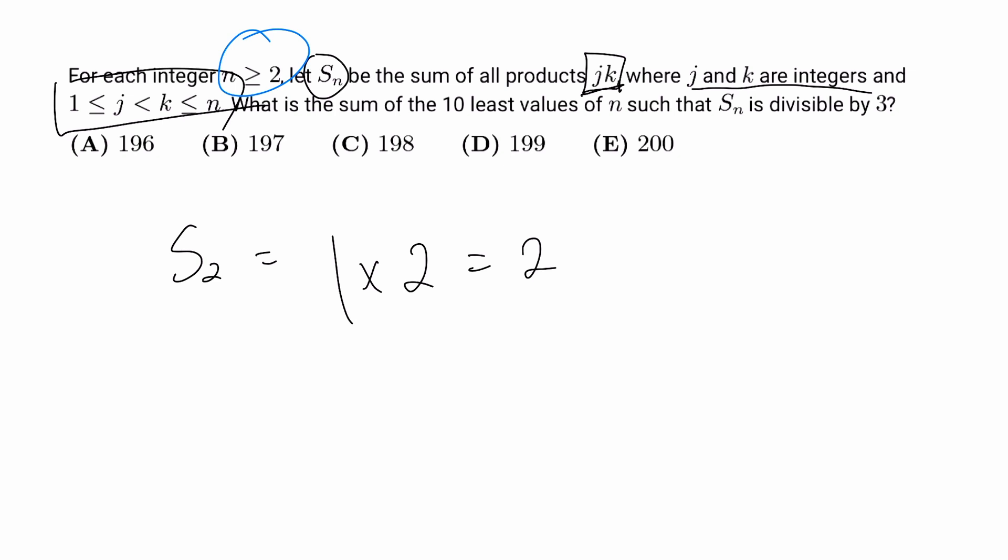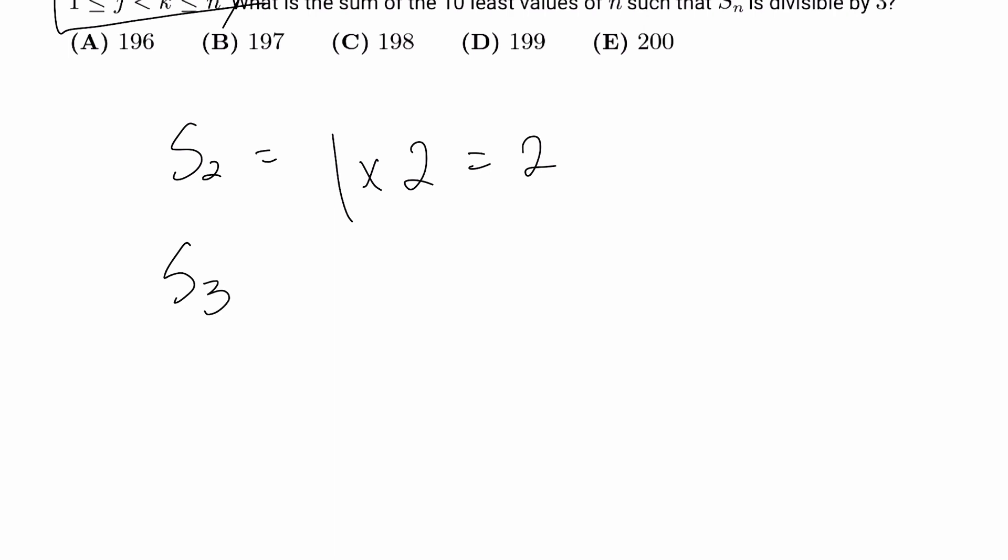Now let's try S_3. We still have that 1 times 2, which still satisfies our condition. Keeping j equals 1, k can be 3. k cannot be any smaller because it has to be greater than j, and 3 is its maximum bound. We can raise up j a little bit, giving us 2 times 3.